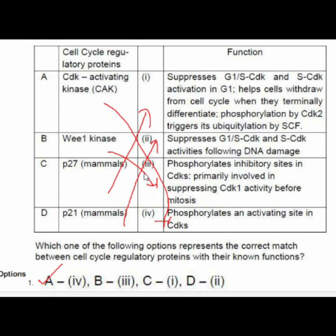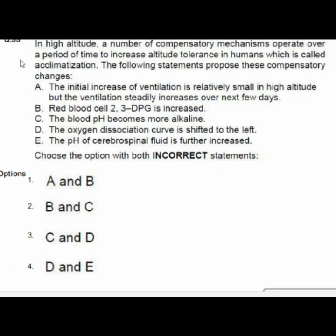Question 55: At high altitude, compensatory mechanisms operate over time to increase altitude tolerance — acclimatization. We must identify the incorrect statements. Option 4 — D and E — are incorrect: D — the oxygen dissociation curve is shifted to the left; E — the pH of cerebrospinal fluid is further increased.